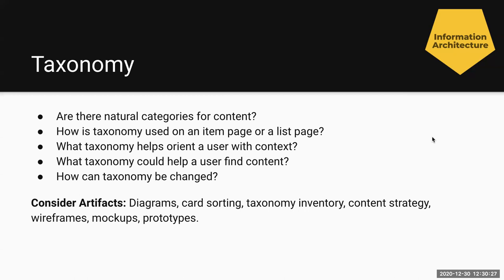Taxonomy: Are there natural categories for content? How is taxonomy used on an item page or a list page? Does it let me see whether this is a press release versus a white paper, or a conference versus a webinar? How are things naturally classified, and does your audience naturally recognize that? What taxonomy helps orient a user within the context they need to make a decision — is it a label near the title, an indicator in search, or a filter? Taxonomy can also change over time. There are controlled vocabularies, like the states in the US or provinces of Canada, and your controlled vocabularies are very similar in that you can often detect what exists as opposed to making it up.